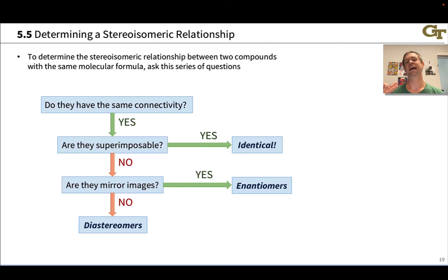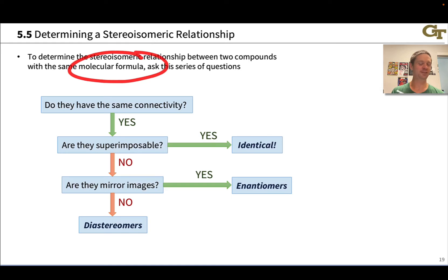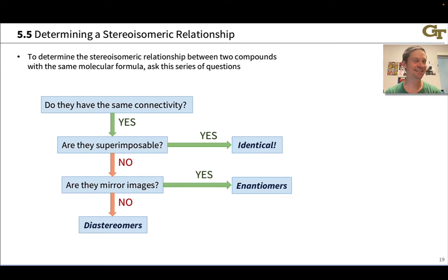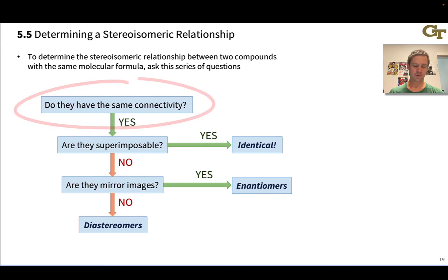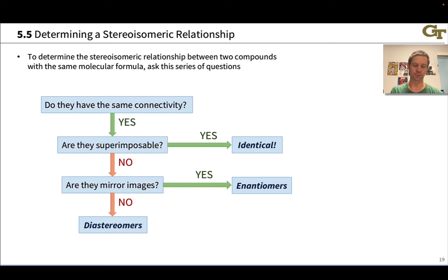This slide shows a series of questions to determine the isomeric relationship between two compounds. The first question: do they have the same molecular formula? Make sure they have the exact same number of carbons, hydrogens, and other atoms. Assuming yes, the next question is: do they have the same connectivity? If not, they are constitutional isomers. It's worth folding constitutional isomers into your general thinking about stereoisomers.